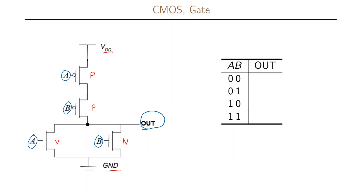Looking at the truth table to see which gate we are implementing: if both A and B are zero, both P transistors will be conducting and neither N transistor will be conducting, giving us a one at the output due to a short circuit between the voltage supply and the output. In the second row where A equals zero and B equals one: the P transistor with input A is conducting but the other is not, while the N transistor with input B is conducting. This gives a short circuit between ground and the output, with no connection to the voltage supply, so the output is zero.